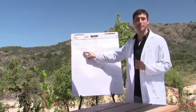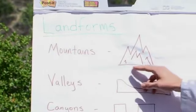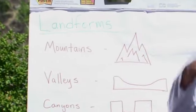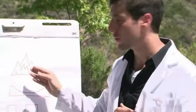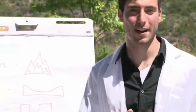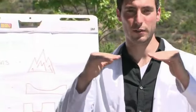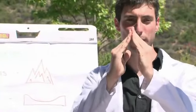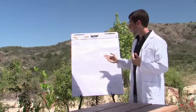One that everybody knows is mountains. Mountains are a landform — they usually have peaks, they're big areas of rock that are uplifted, and that usually happens from tectonic movement. That's where the Earth's plates in the crust push against each other and they will actually push up to form mountain landforms.